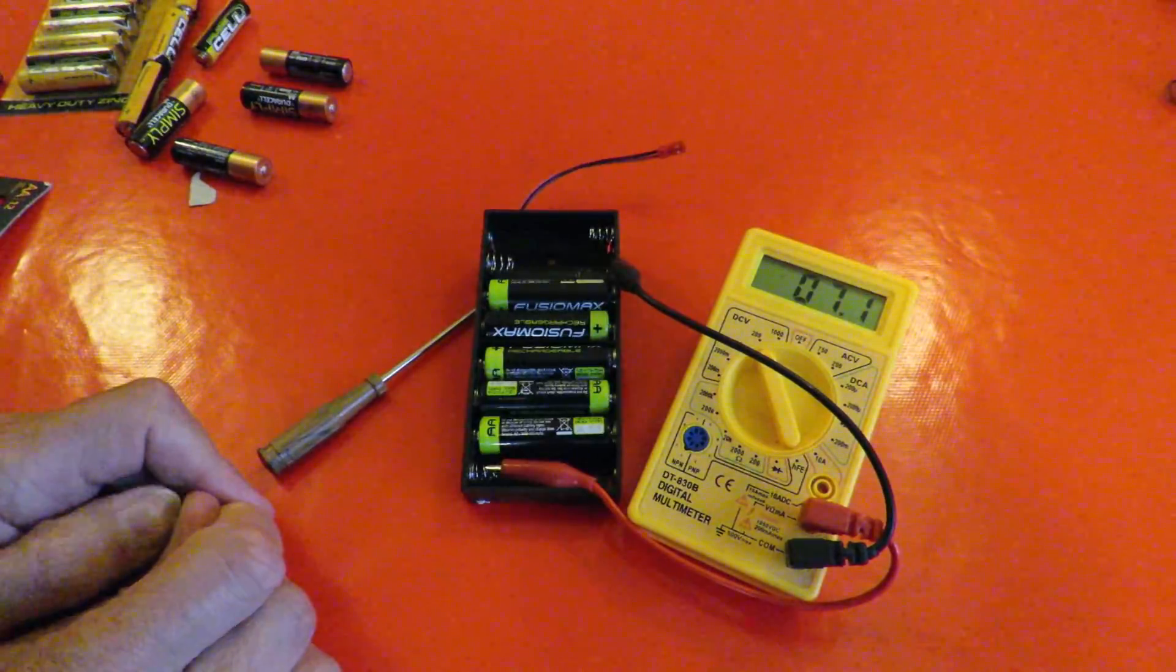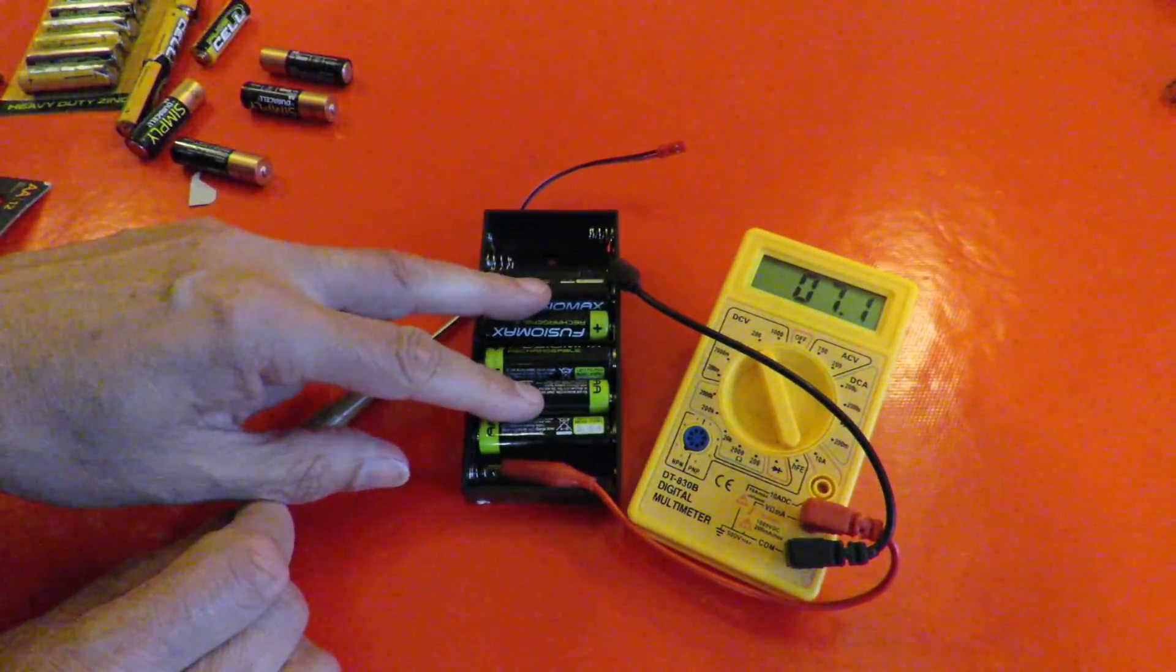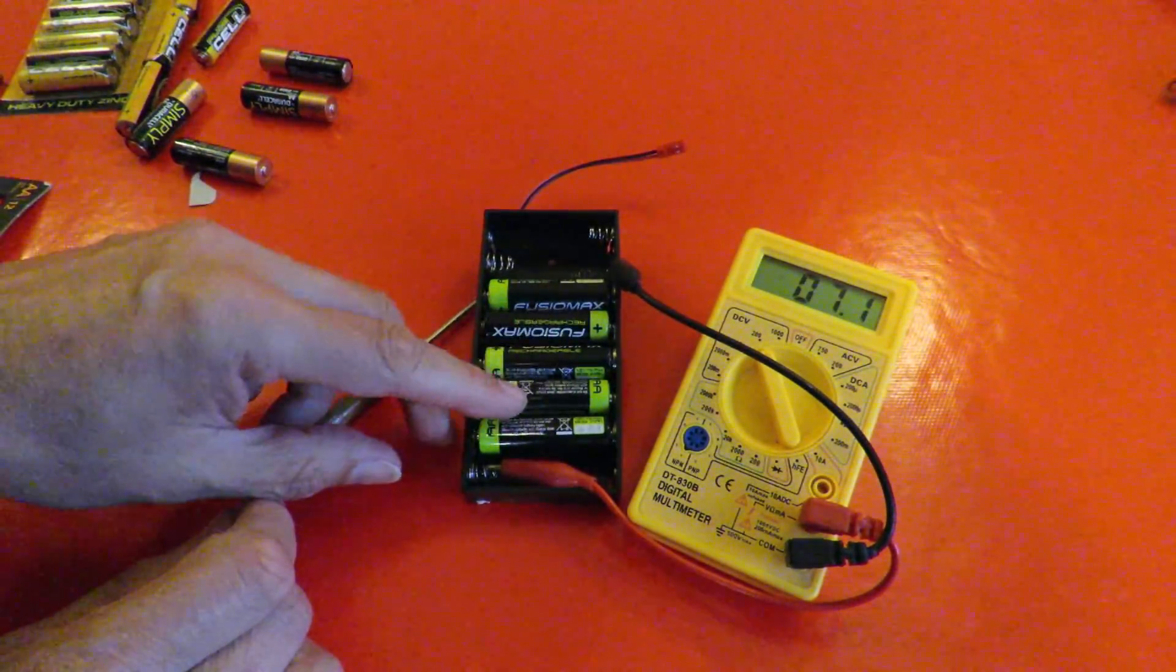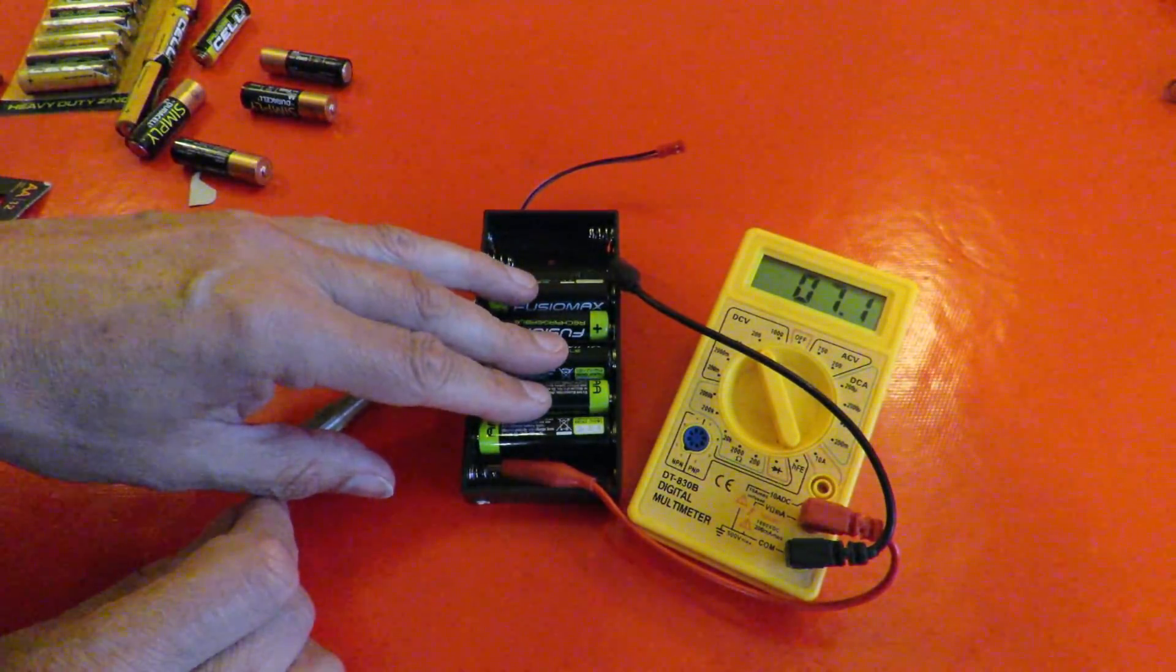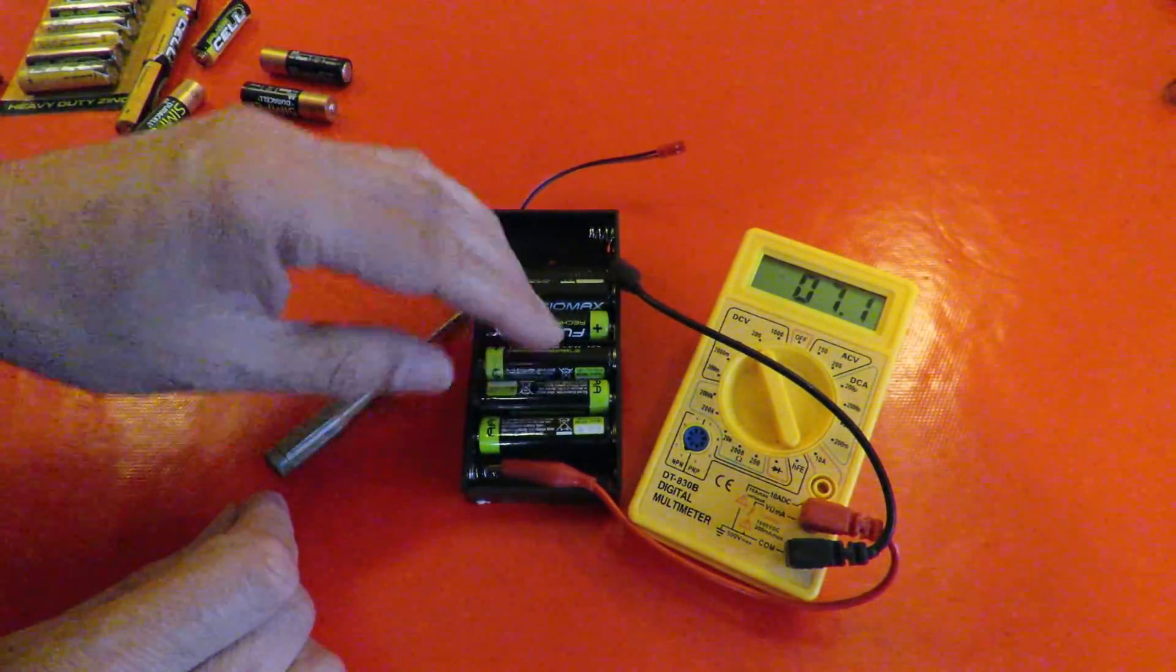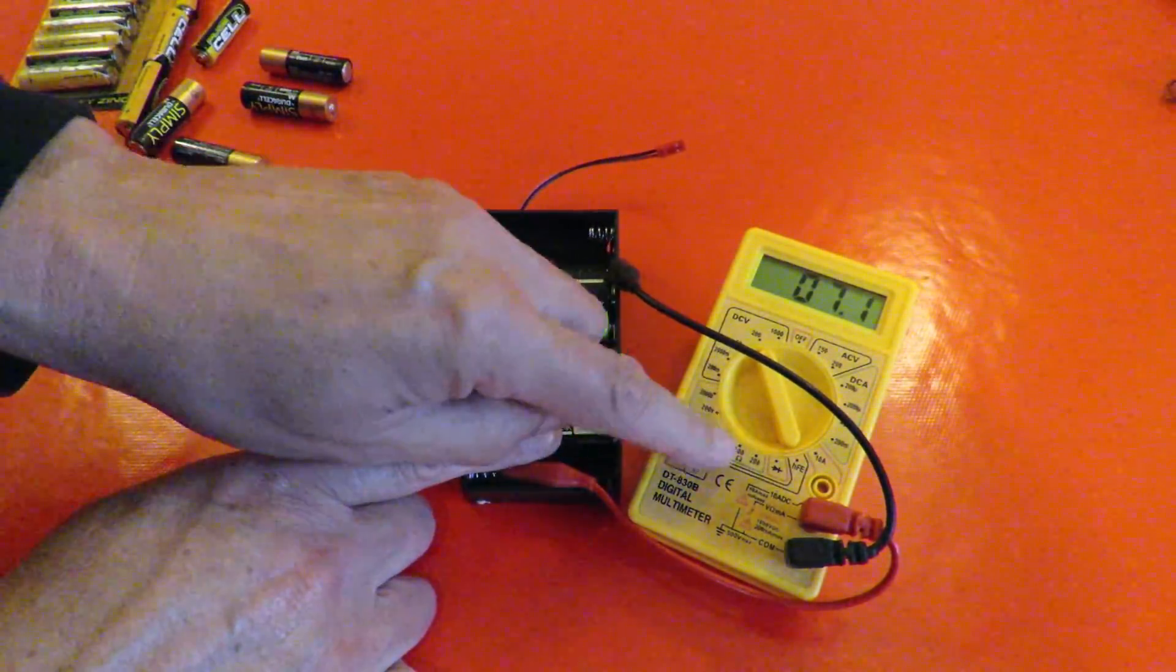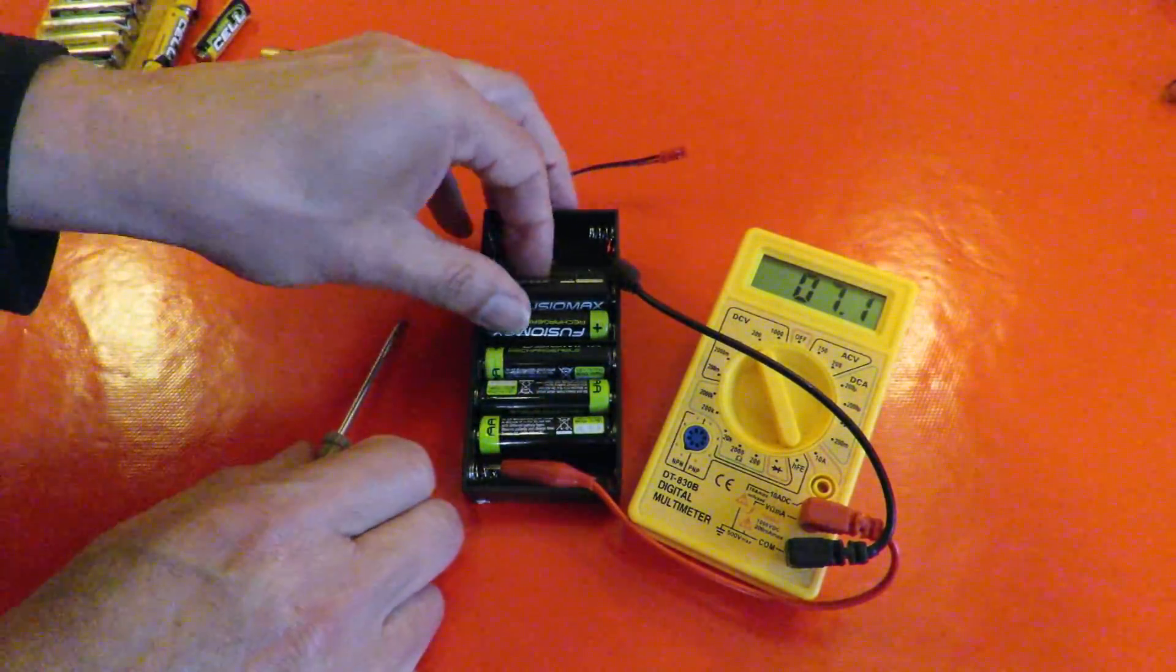Well we're only getting 7 volts there. So people talk about nickel metal hydride being 1.2 volts, so 5 times 1.2 would actually be 6 wouldn't it? We're getting about 7.1 volts here so we're doing a bit better than that. We're probably getting 1.4. That would make sense wouldn't it? About 1.4 volts out of them.